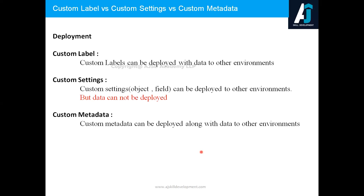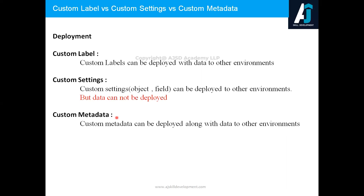The next aspect is deployment. When moving things from one environment to another — such as from developer to production — custom label can be deployed with both the label and its data. For custom settings, there is a limitation: you cannot move the data — only the object and fields are moved; you need to recreate the data in the other environment. Custom metadata supports moving both the schema and the data — the object as well as the records — to the other environment.